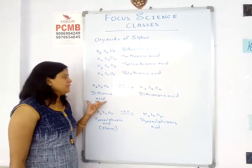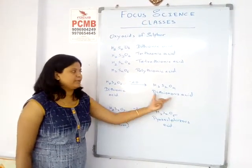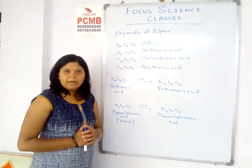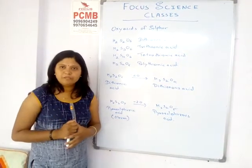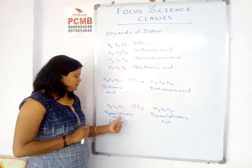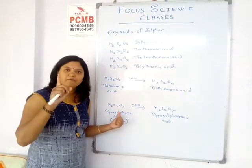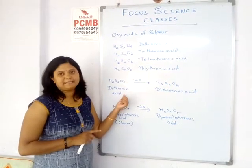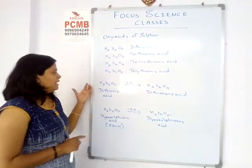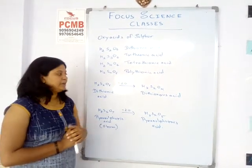For dithionic acid (H₂S₂O₆): if we remove one oxygen atom from pyrosulfuric acid (H₂S₂O₇), we get dithionic acid. This is the relationship between pyrosulfuric acid and dithionic acid — remove one oxygen atom from pyrosulfuric acid and you get dithionic acid. To relate both series together, we remove two oxygen atoms to get the respective dithionic compounds.